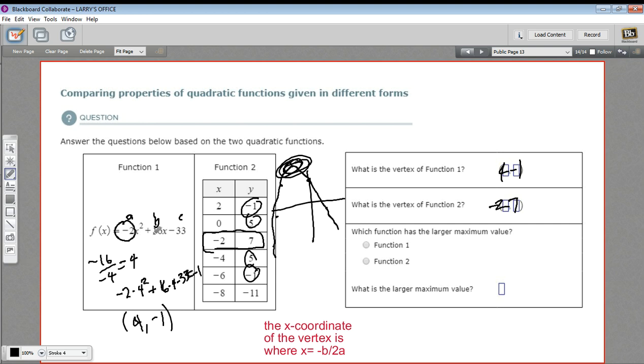Now, the value of the function at the vertex is going to be the maximum value. The value of that function is the y-coordinate. So the maximum value of function 2 is 7. The maximum value of function 1 is negative 1. That's as high as it gets on the y. So the function that's got the larger maximum value is going to be function 2 because 7 is bigger than negative 1. And that larger maximum value is 7. So that's a little bit of work in comparing some quadratic functions, one where you've got an equation and another where you've got a table of values.